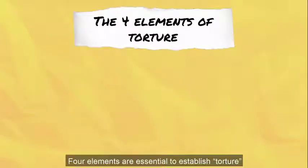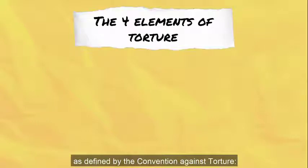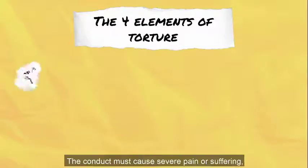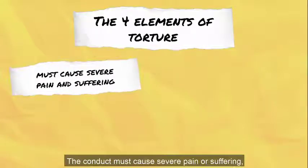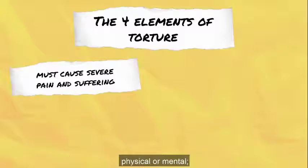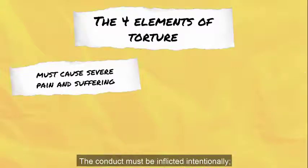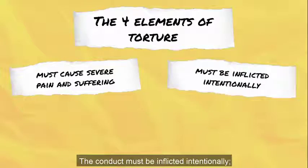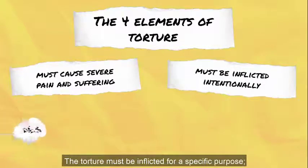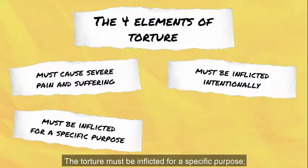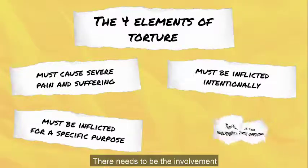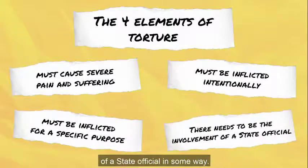Four elements are essential to establish torture as defined by the Convention Against Torture. The conduct must cause severe pain or suffering, physical or mental. The conduct must be inflicted intentionally. The torture must be inflicted for a specific purpose. There needs to be the involvement of a state official in some way.